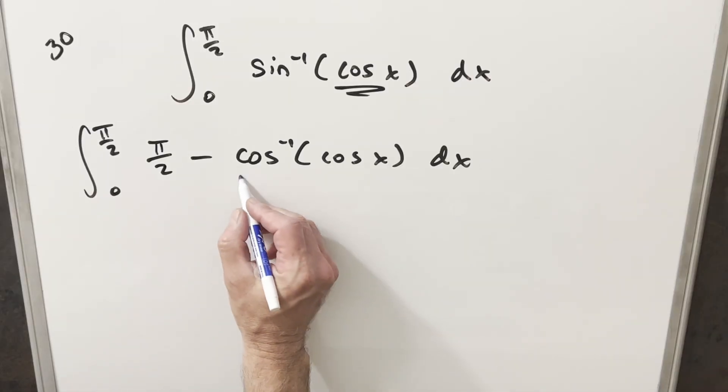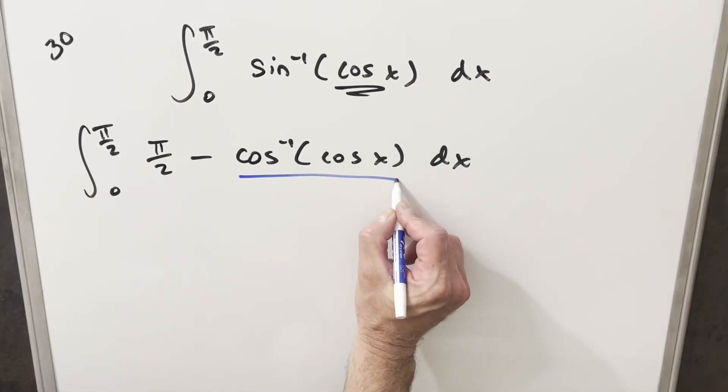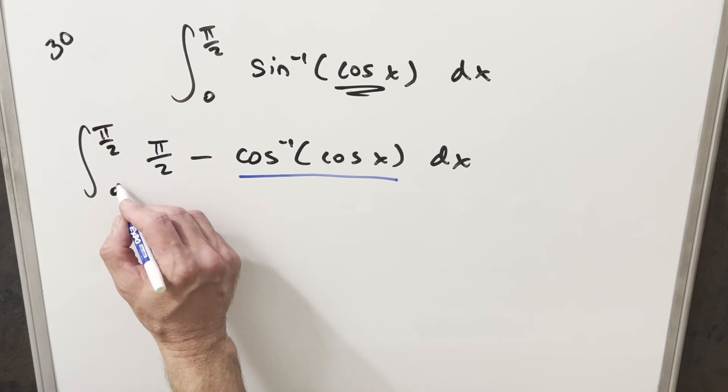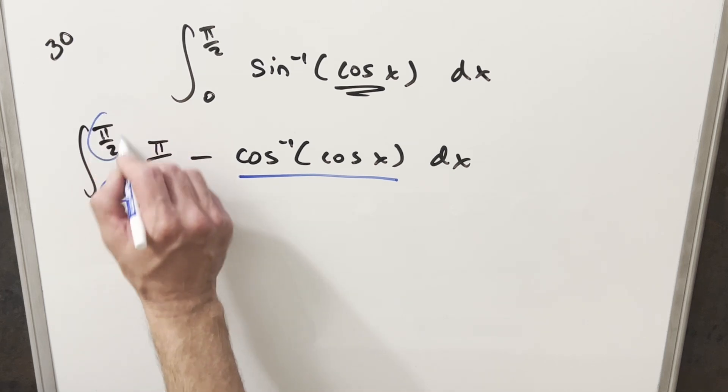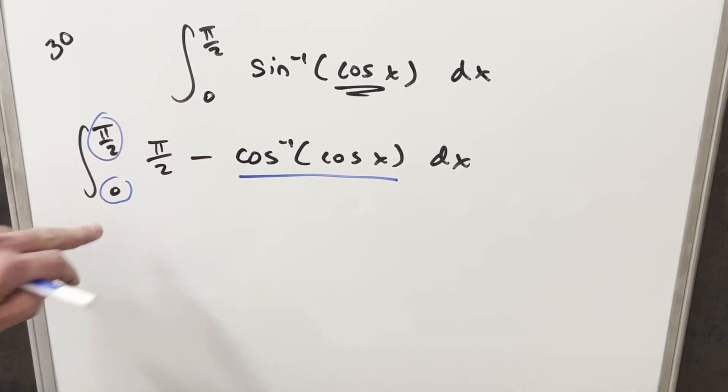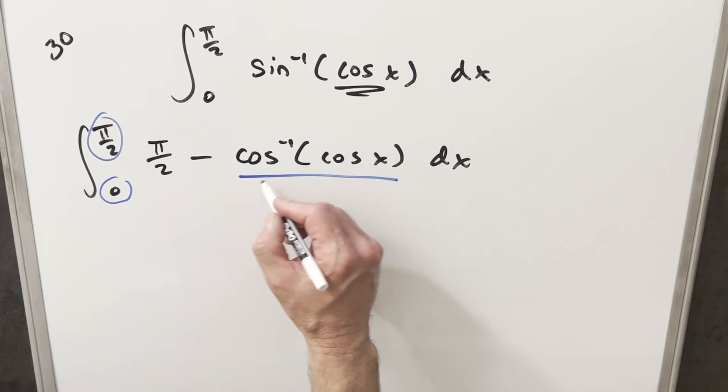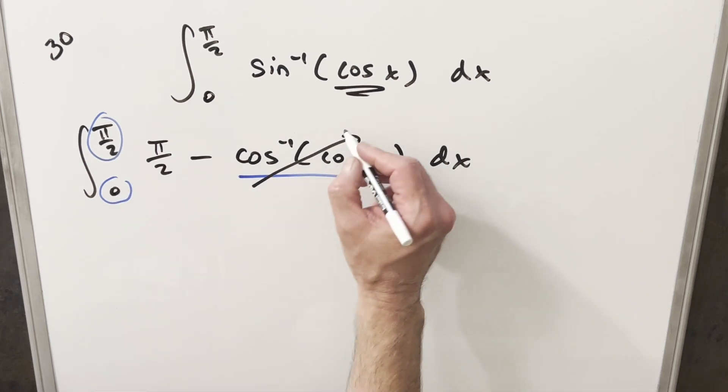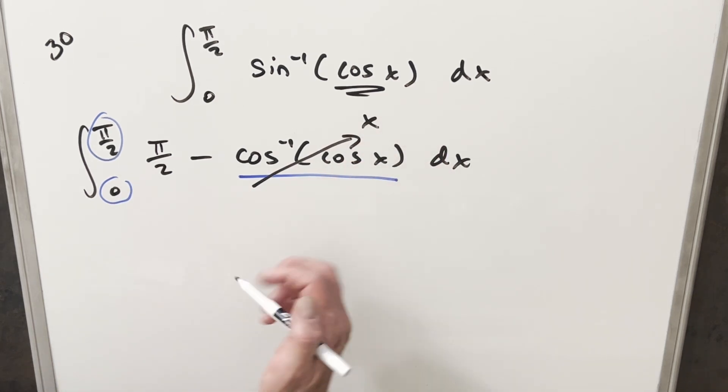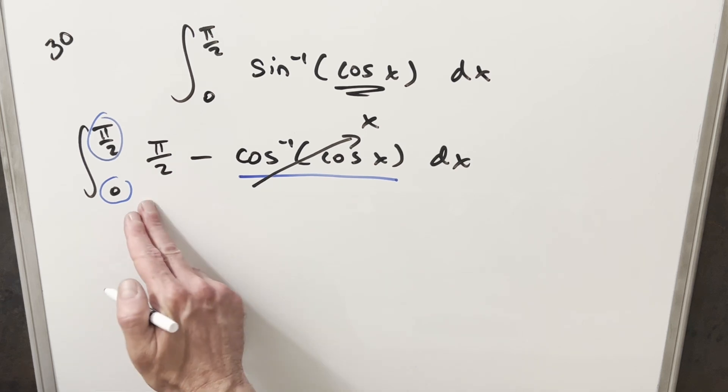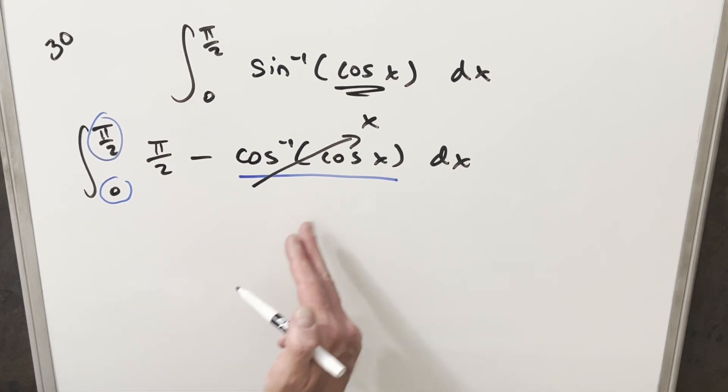Now from here we're going to get some nice simplification. You have to be a little careful with this - we have to look at our bounds. Our bounds are just going from 0 to π/2, so this is the first quadrant and everything works out nice. This value reduces to x. If you had different bounds you'd have to be careful, but for this example this becomes just x.